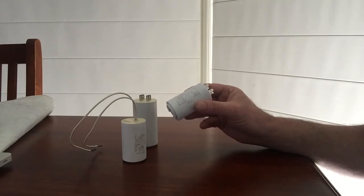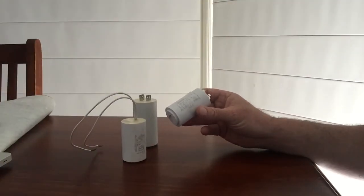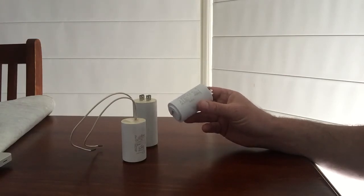Most capacitors in pool pumps these days are rated at a high voltage, around 400 to 440 volts. You might ask, but my supply voltage is only 240 volts, why are they rated so high? It's because of the induced voltages from the motor windings in the electric motor.